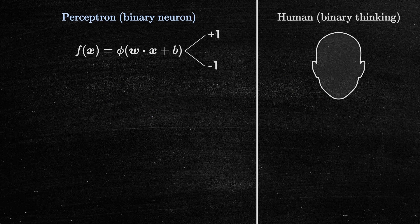Dichotomous thinking refers to the tendency to view things in terms of binary opposites, such as black or white, good or bad, or all or nothing. This is why the perceptron neuron is also known as the binary neuron.